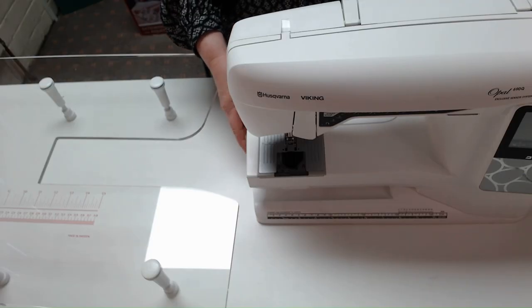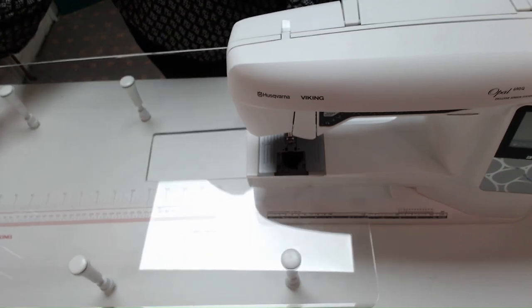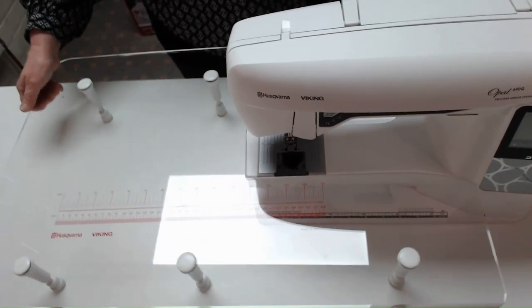I'm going to show you how to put the clear table on. First, we're going to remove the accessory tray from the back of the machine, and then we're going to slide on the extension table all the way along.